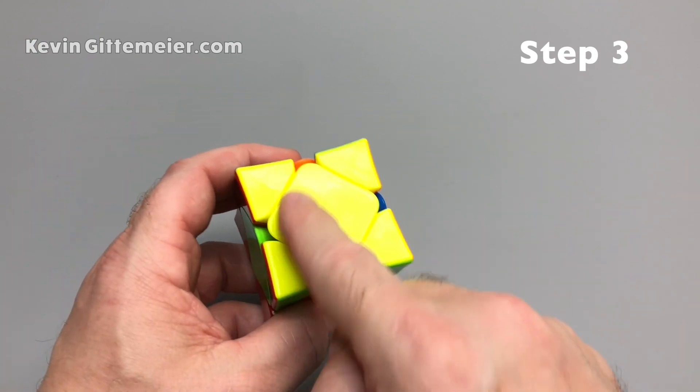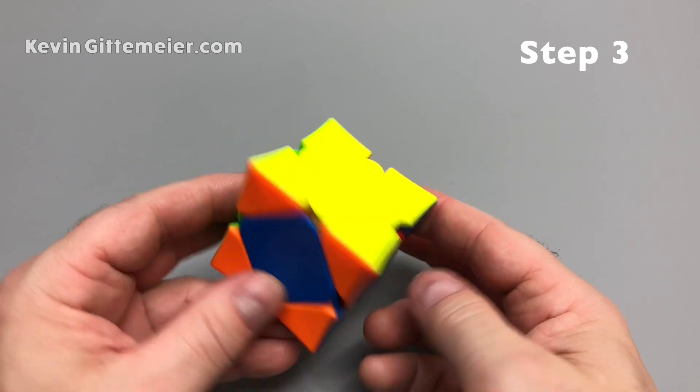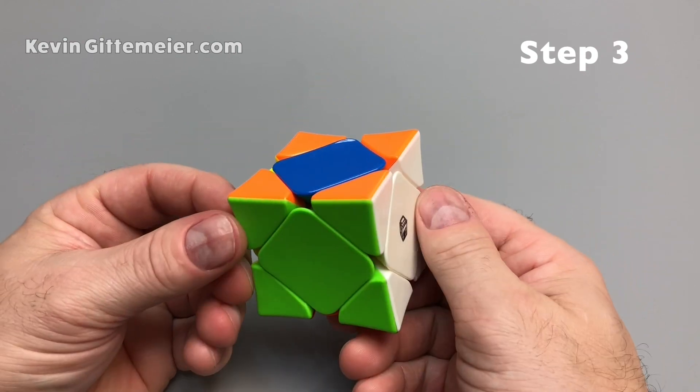So the bottom layer is solved, the top layer is solved. Now armed with that information, it should be pretty easy to figure out how to solve the rest of the cube.